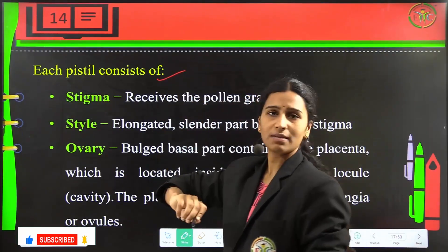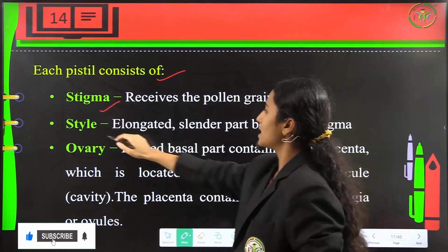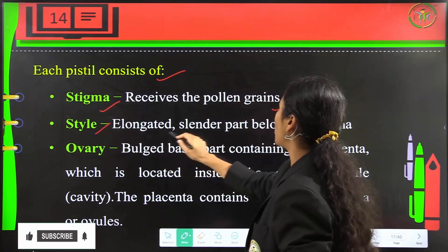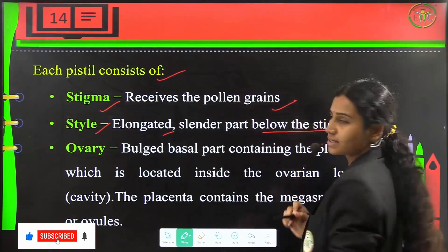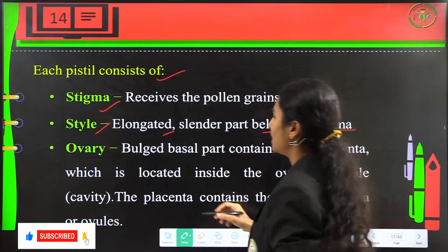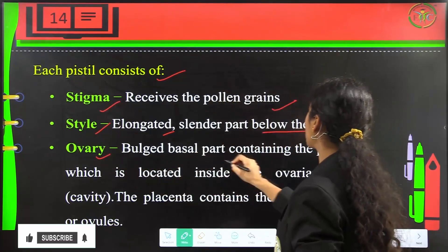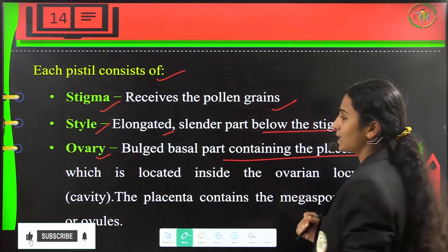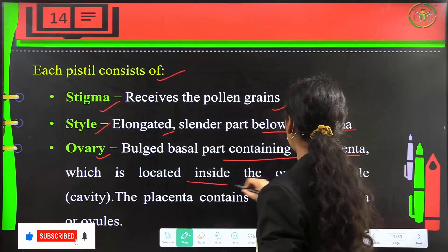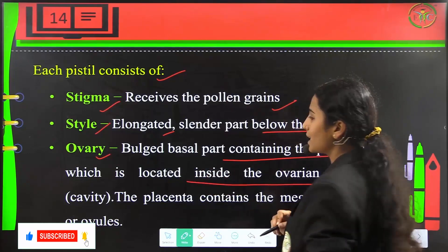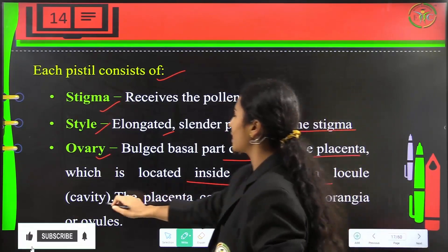Each pistil consists of a stigma, which receives pollen grains; a style, which is the elongated slender part below the stigma; and an ovary, which is the bulged basal part containing the placenta, located inside the ovarian locule or cavity.